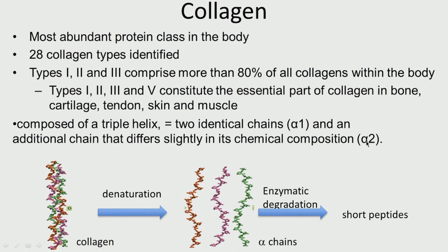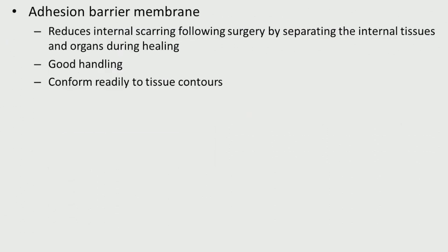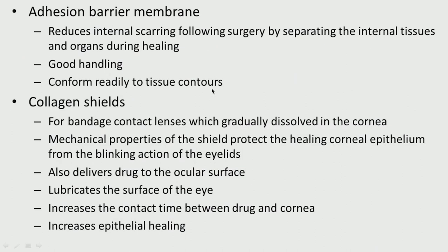Alpha-2 is slightly different in chemical composition. Collagen has a lot of applications. There is already a commercial product in vascular prosthesis — collagen-polyester composites used for peripheral arterial reconstruction, offering very good structural durability, long-term patency, and low infection rates. It can also be used as an adhesion barrier membrane to reduce internal scarring following surgery by separating internal tissues and organs during healing. Collagen shields can be used as bandage contact lenses which gradually dissolve in the cornea, protecting the healing corneal epithelium from the blinking action of the eyelids, delivering drugs, lubricating the eye surface, increasing contact time between drugs and cornea, and increasing epithelial healing.